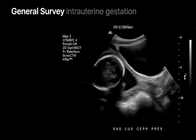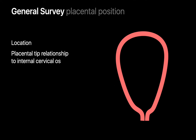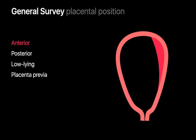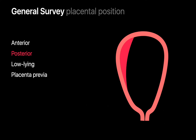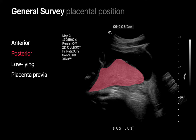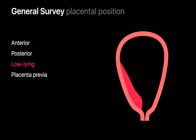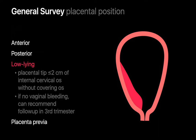We then turn our attention to the contents of the gravid uterus, beginning with the placenta. We identify the location of the placenta and check how close its inferior tip approaches the internal cervical os. Placentas can be anterior or posterior in location. Some placentas are low-lying, meaning the placental tip approaches but does not cover the internal cervical os. We describe a placenta as low-lying if its tip encroaches within two centimeters of the internal cervical os.